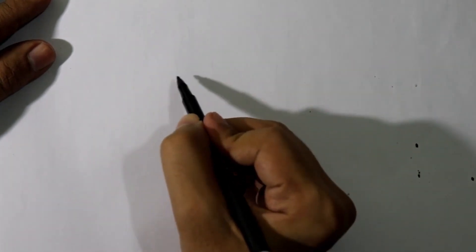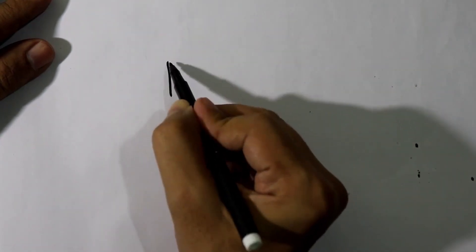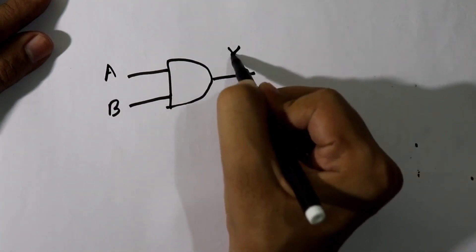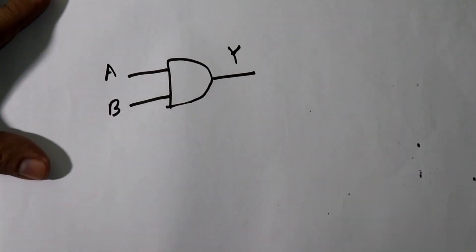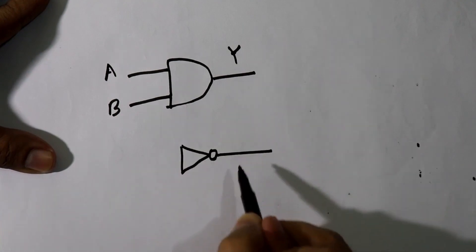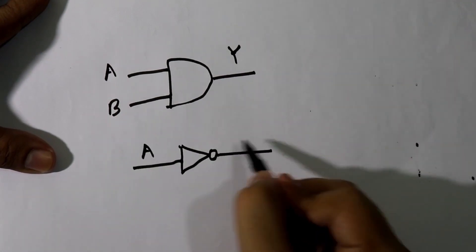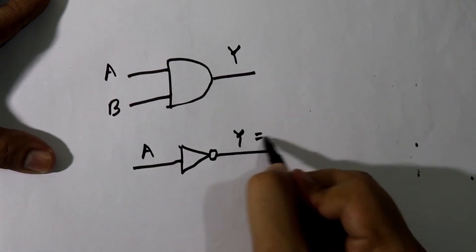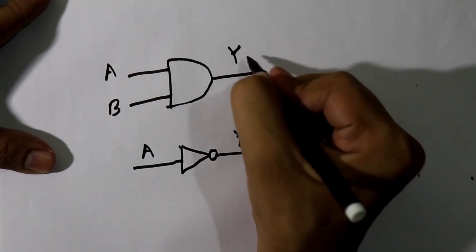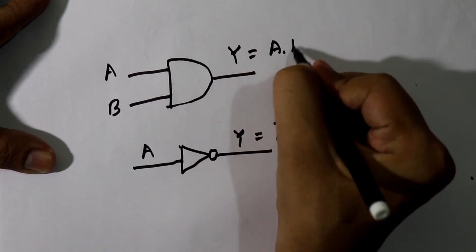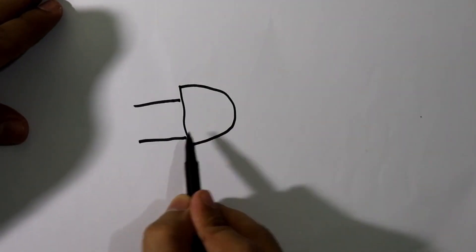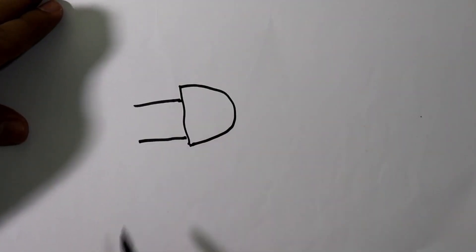The symbol of an AND gate has inputs A and B and output Y. The symbol of a NOT gate has input A and output Y, where Y equals A complement. For the AND gate, Y equals A dot B.